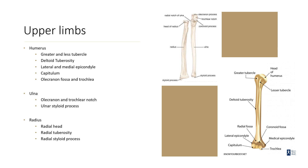The humerus also has a capitulum, which is just another type of articular surface. It also has the olecranon fossa and the trochlea, which articulate with the olecranon and trochlear notch of the ulna. The ulna is characterized by that C-shape because the ulna is a portion of your elbow. The olecranon process articulates with the olecranon fossa of the humerus. The ulna also has a coronoid process as well as a styloid process.